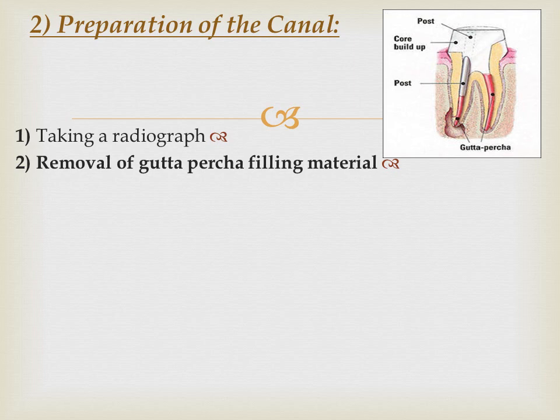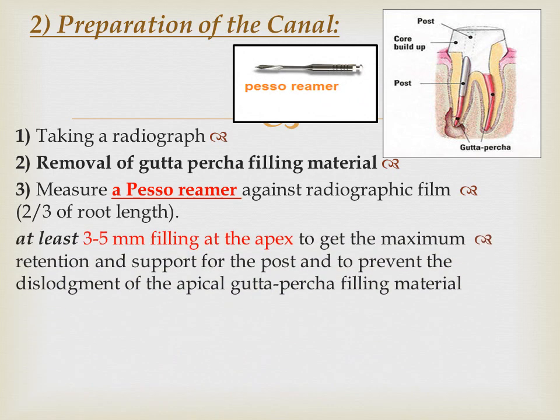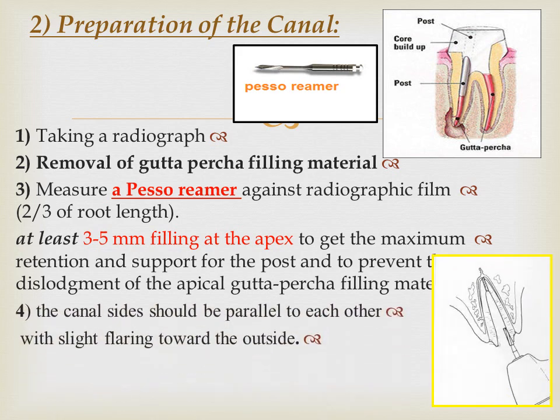We remove the gutta-percha from the canals using a byssorima. We should remove two-thirds of the root filling, leaving at least two to five millimeters at the apex to achieve maximum retention and support for the post and to prevent dislodgement of the apical gutta-percha. The canal walls should be parallel to each other with a slight flaring toward the outside.